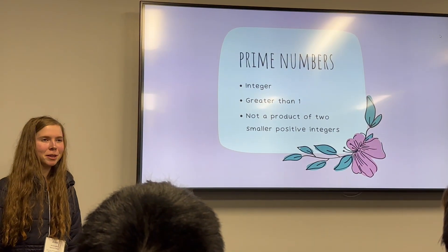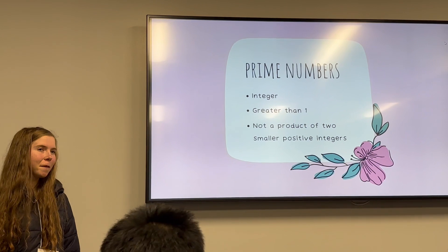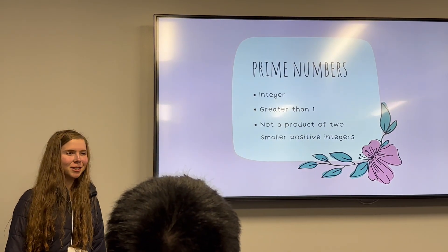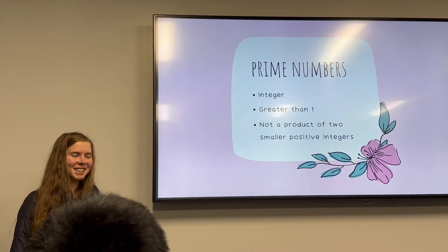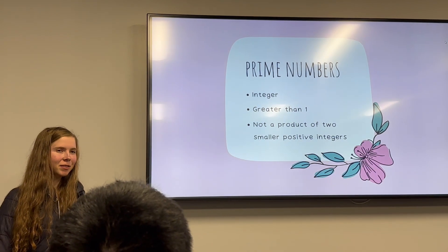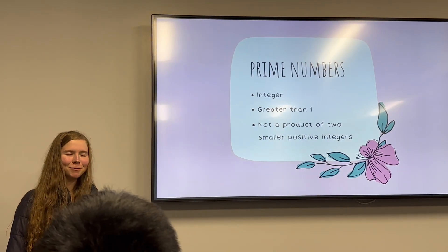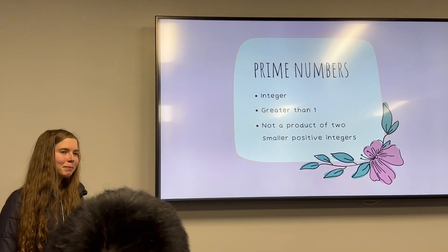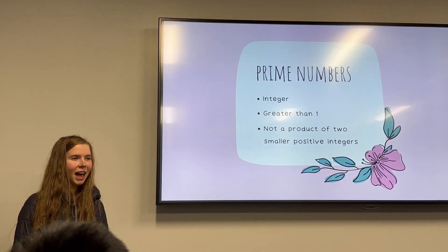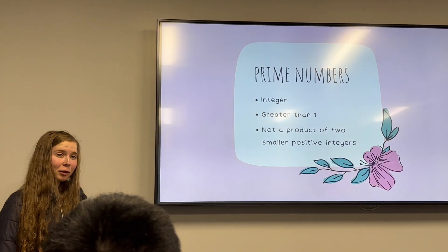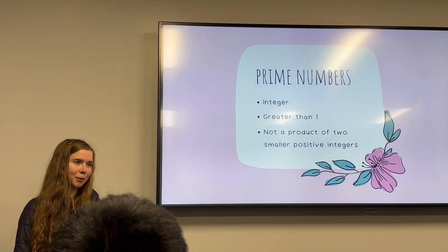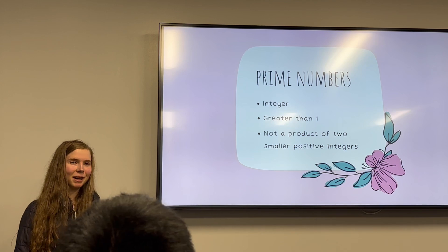In order to be prime, you must meet three requirements. First, you have to be an integer, which is a whole number like negative 1, 0, 1, 2, 3, etc. Secondly, you have to be greater than 1, so all of the negative numbers along with 0 and 1 don't make the cut. Last but not least, you can't be a product of two smaller positive integers. As a consequence, the number 12, for example, could not be prime — 12 equals 3 times 4, and that's a product of two smaller positive integers.